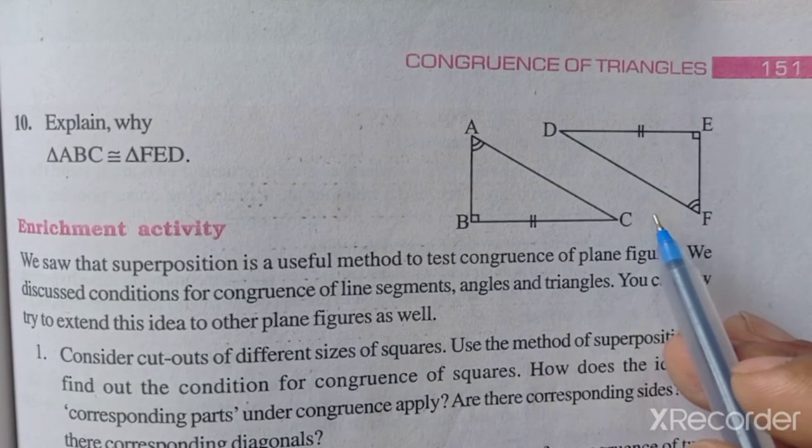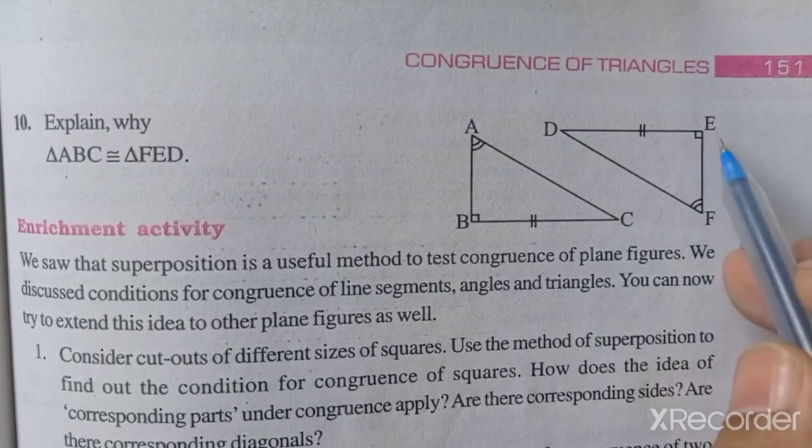Triangle ABC is congruent to triangle FED. How to write?